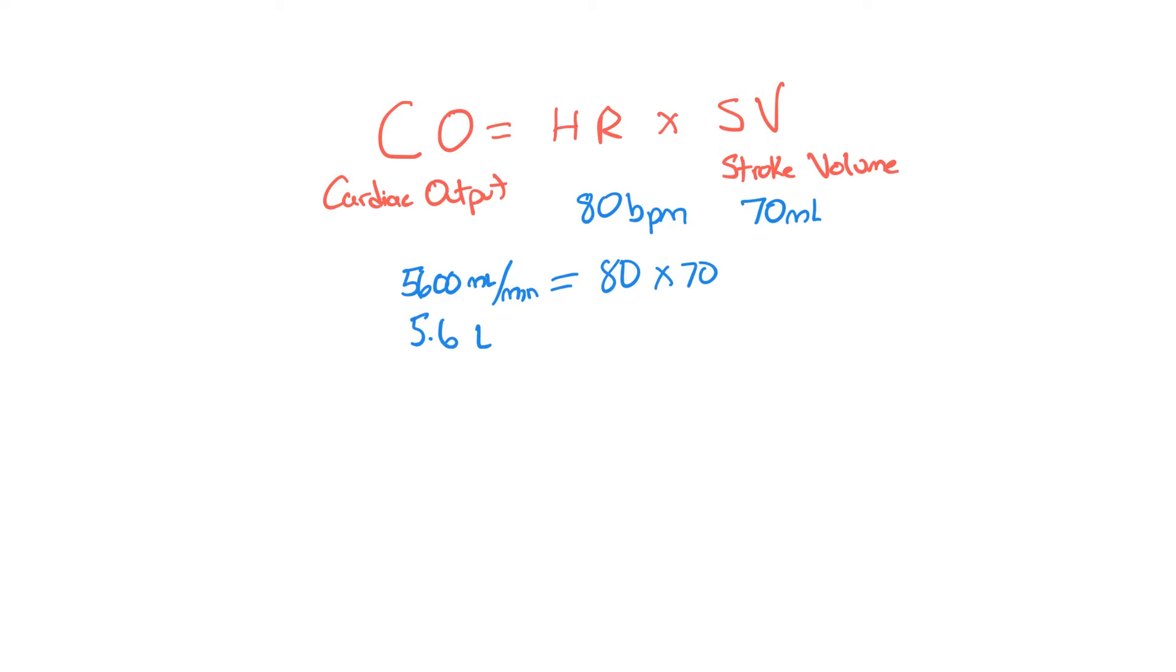Again, that's beats per minute multiplied by milliliters per beat, and then we end up with the total. Now, heart rate is dependent on your sympathetic and parasympathetic nervous systems, and remember, beta-1 stimulates the heart rate, so beta-1 causes your heart to beat faster and stronger. But let's talk about stroke volume.